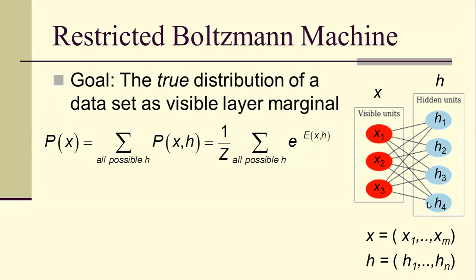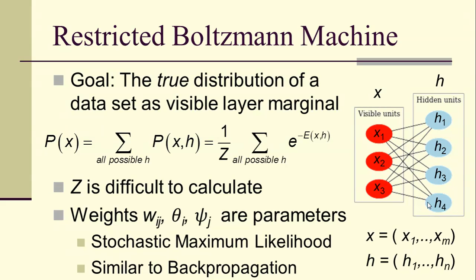The goal is the true distribution of a data set as the visible layer marginal. In other words, the hidden layer is just a helper layer. What we really want is to use the visible layer to reproduce a probability. So the marginal probability on the visible layer is just the sum over all possible H's of the joint P of X, H, which is 1 over Z times the sum over all possible H of e to the negative energy of X, H. Now Z here is difficult to calculate because there's exponentially many different ways of choosing values for X and H, even when we restrict X and H to simply be 1s and 0s, or 1s and negative 1s.